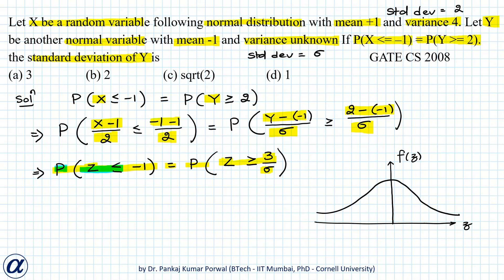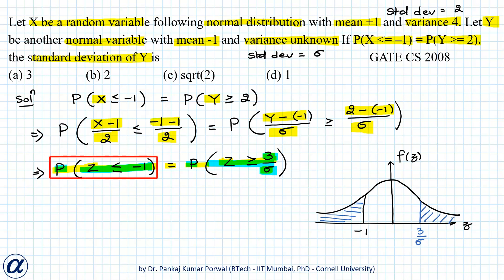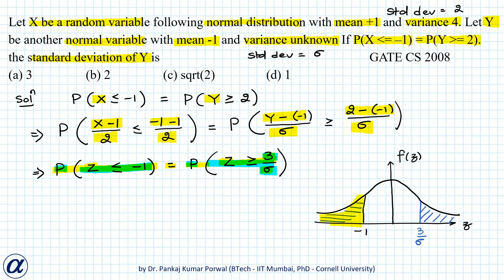P(Z ≤ -1) represents the area under the standard normal density to the left of minus 1, and P(Z ≥ 3/σ) represents the area to the right of 3/σ. Because these areas are equal and the standard normal distribution is symmetric, this holds only when 3/σ equals 1, giving sigma equals 3. So option A is correct.